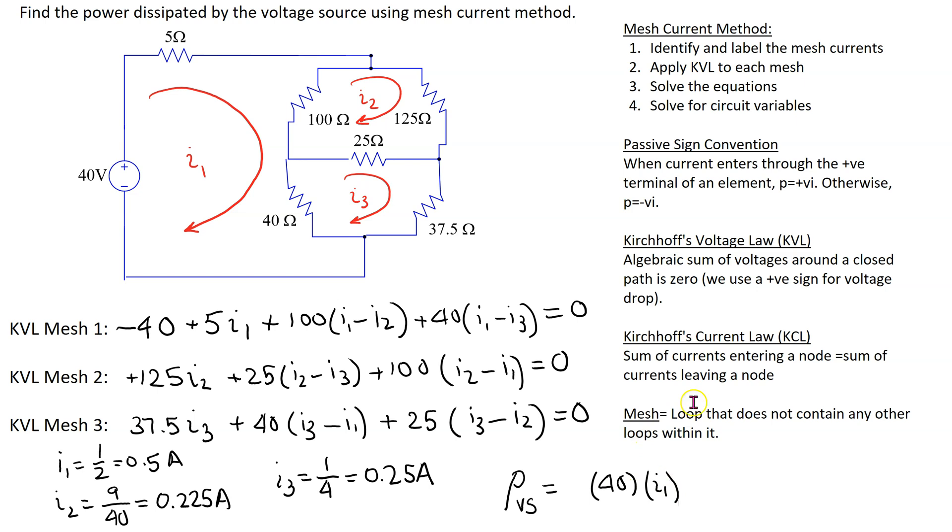We use passive sign convention to decide the sign of the power calculation. We can see that I1 is entering the terminal marked negative. Hence we use the power calculation with a negative sign. Substituting values we can show that this is equal to I1 is 0.5, so this comes out minus 20 watts. The final answer is negative and this is signifying that the voltage source is supplying power in this circuit.